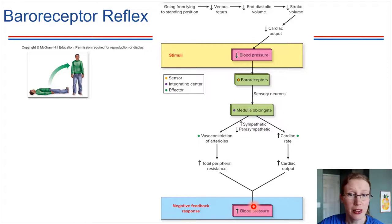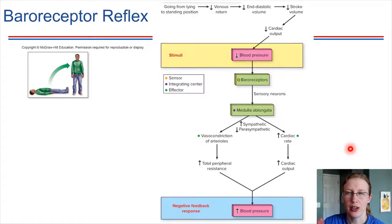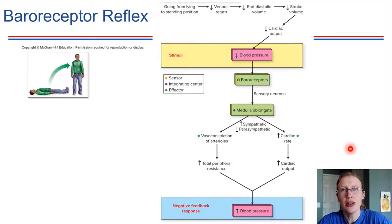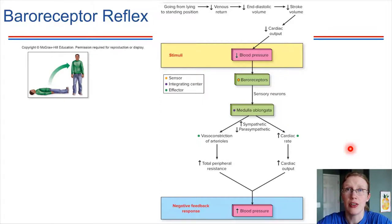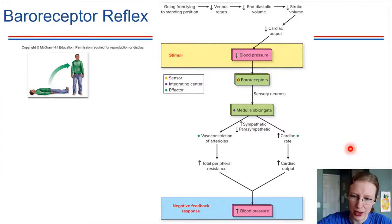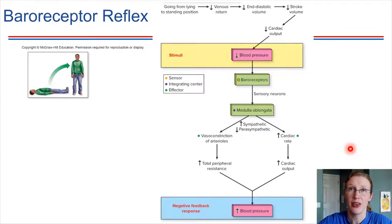So there's a feedback loop. Hopefully this feels like things are coming together — we've covered a lot of ground in physiology. We've learned many different key systems in the body that all have to work together. We should be starting to see these interconnections, and even if you don't understand all the details, you can follow through a flow chart like this and understand what's going on.